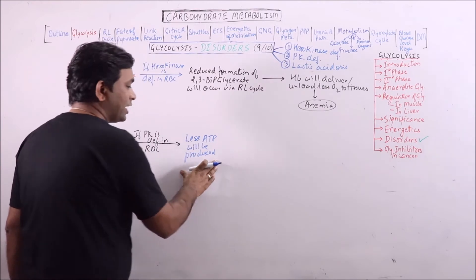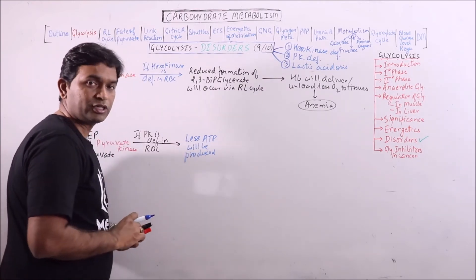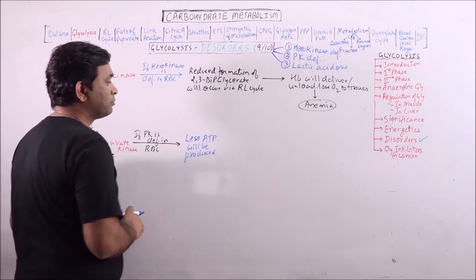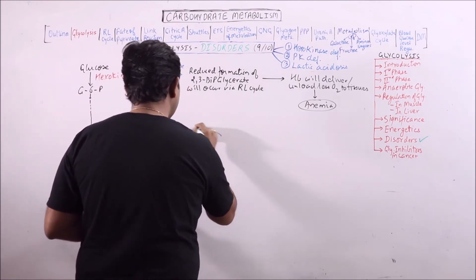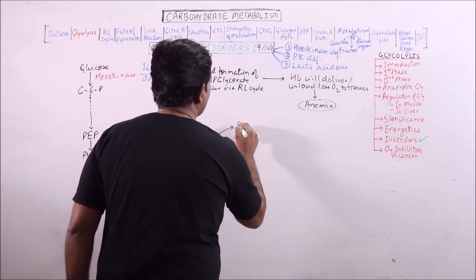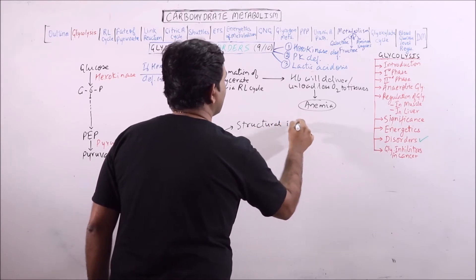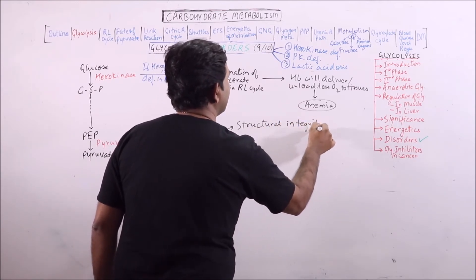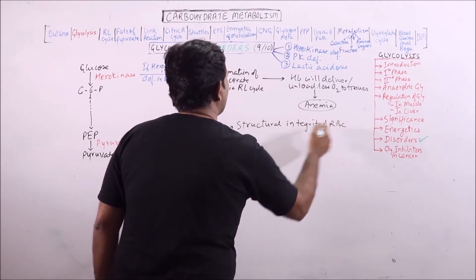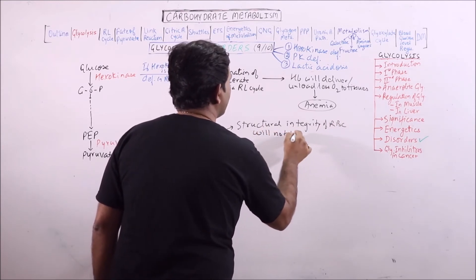ATP is required for maintaining the structural integrity of RBC and also for functioning of pumps. In case of less production of ATP, structural integrity of RBC will not be maintained.